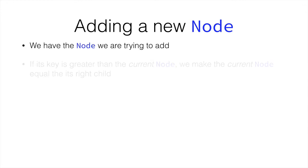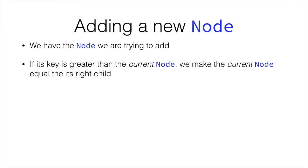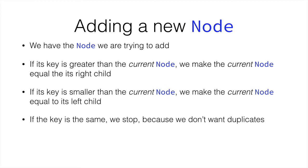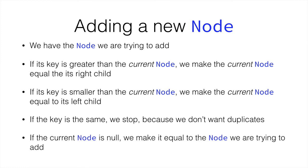To summarize: we have a node we're trying to add. If the key is greater than the current node, we make the current node equal to its right child, moving to the right. If the key is smaller, we make the current node equal to its left child, moving to the left. If the key is the same, we stop. And if the current node is null, instead of it being null, we make it equal to the node we're trying to add.